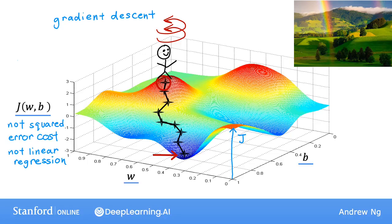Remember that you can choose a starting point at the surface by choosing starting values for the parameters w and b. When you perform gradient descent a moment ago, you had started at this point over here. Now imagine if you try gradient descent again, but this time you choose a different starting point by choosing parameters that place your starting point just a couple steps to the right over here.